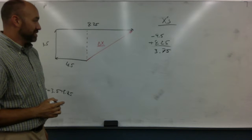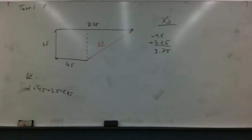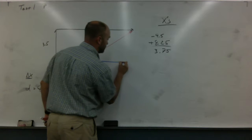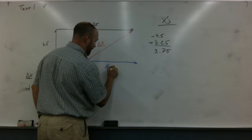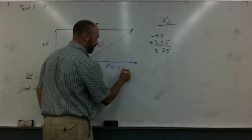Okay, so it's positive 3.75. Now I'm going to draw that up here in blue. So it's going to go from here to here. This is my net x, and it's 3.75, and notice it's positive.